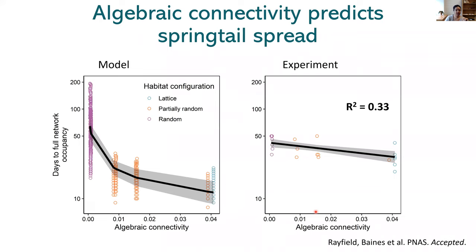Here we have days to full network occupancy on the Y axis and algebraic connectivity on the X axis for both the model and the experiment. Algebraic connectivity predicts a lot of variation in spread rate — a full third of the variation in spread rate in the experiment can be explained by algebraic connectivity. This is really exciting because it means algebraic connectivity can potentially be used to predict the spread rate of populations in real-world ecological networks, potentially even before spread happens — for example, in the context of biological invasions, if we have information about the dispersal kernel of the species.